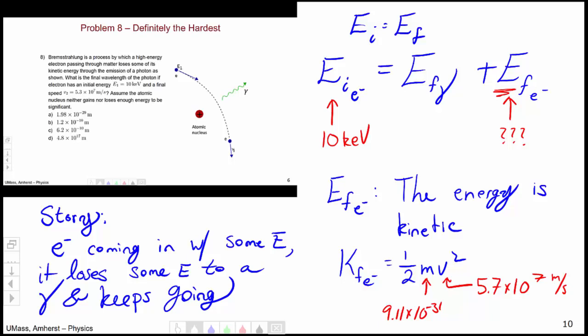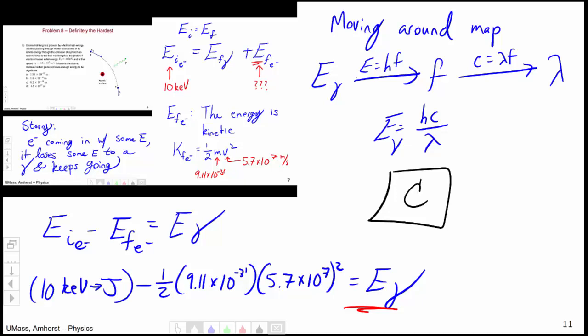At the end, we know that the energy is all kinetic, so 1/2 mv squared. I know the mass of the electron, and I gave the final speed of the electron, 5.7 times 10 to the seventh meters per second. Chugging all that out, we were able to calculate the energy of the photon, and then we just had to move around the quantum map to get the wavelength, and the correct answer ended up being C.